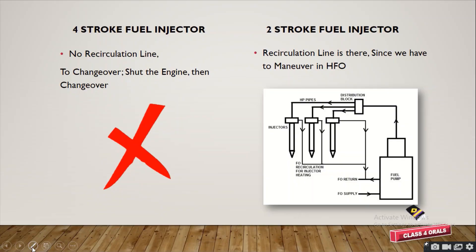The first difference is the 4-stroke fuel injector does not have any recirculation line, and in that case to change over we have to shut the engine first and then change over. Whereas in the 2-stroke fuel injector there is a recirculation line present, because we have to maneuver the ship in HFO. You can see the recirculation line in the diagram below.